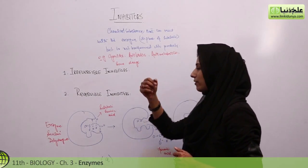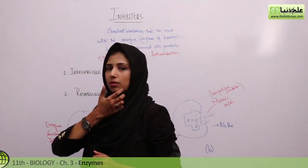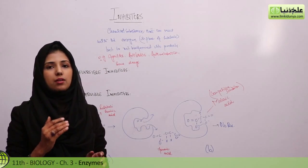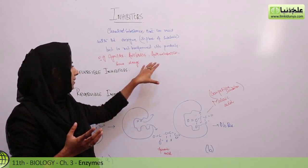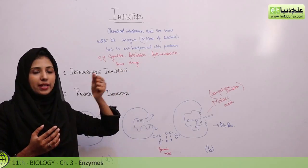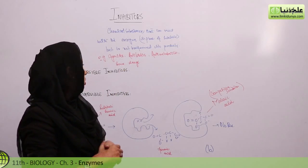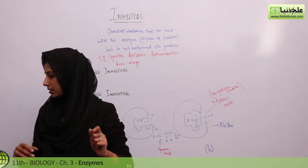Examples of inhibitors are cyanide, antibiotics, anti-metabolites, and some drugs. Cyanide is a poison, anti-metabolites block metabolic processes, and antibiotics are drugs that block microorganism growth.